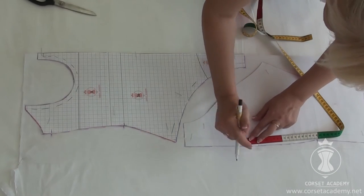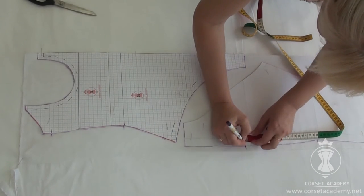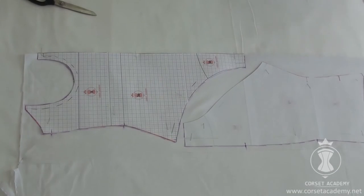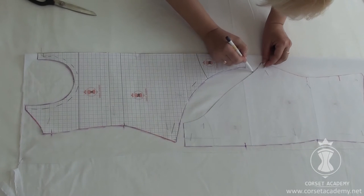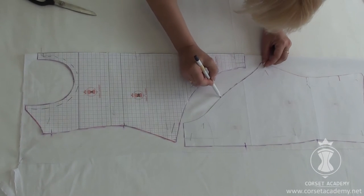Then I transfer all notches including the zipper notch 20 cm below the waistline and the crotch notches. I will cut out the crotch pieces later.